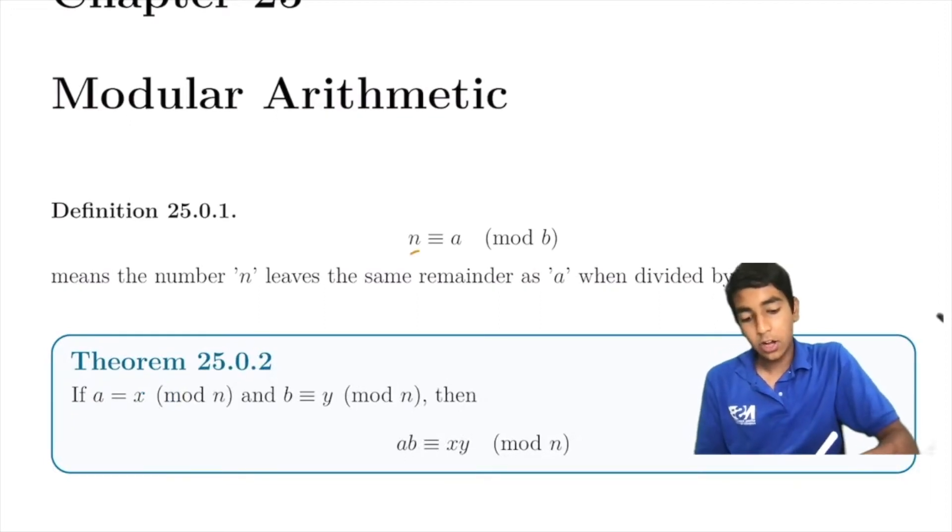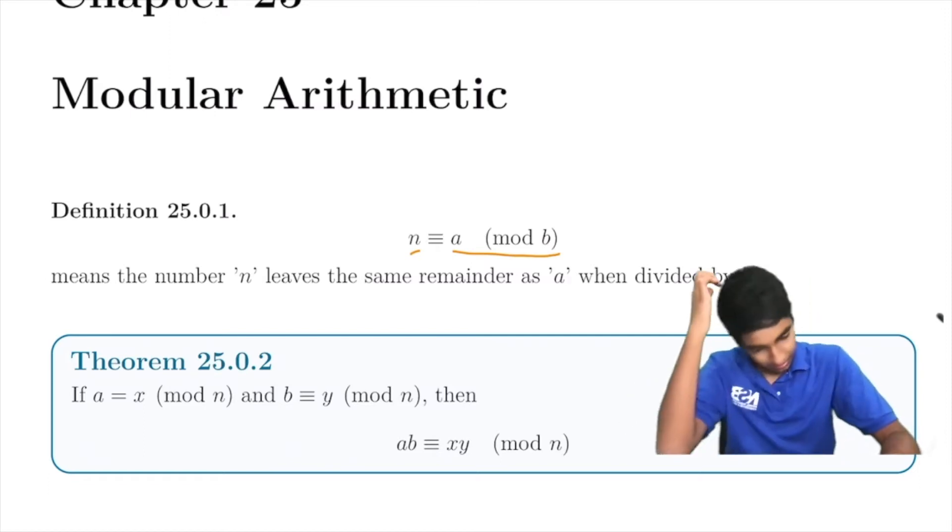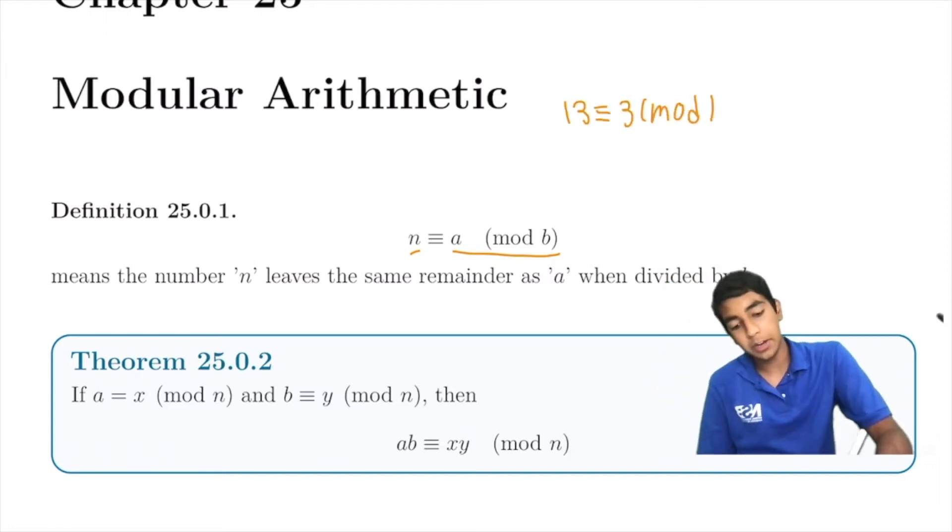We say a number n is congruent to a mod b if the number n leaves the remainder of a when divided by b. For example, 13 is 3 mod 10 because it leaves the remainder of 3 when divided by 10.